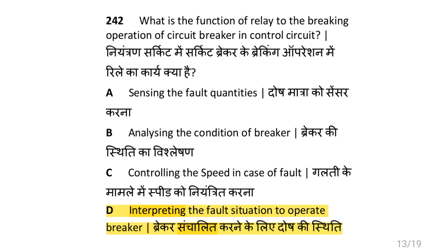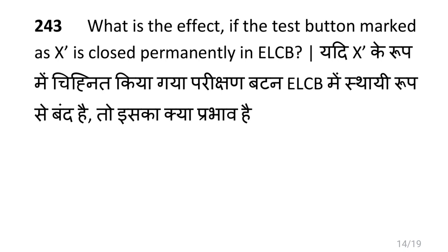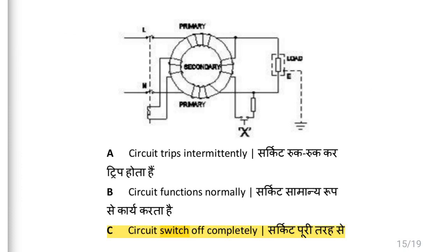What is the function of a relay in the braking operation of a circuit breaker in a control circuit? That is interpreting the false situation to operate the breaker. What is the effect if the test button marked as X is closed permanently in ELCB? Then the circuit switches off completely.